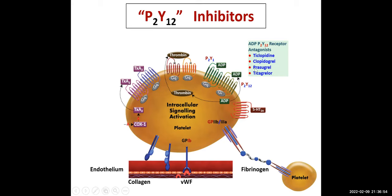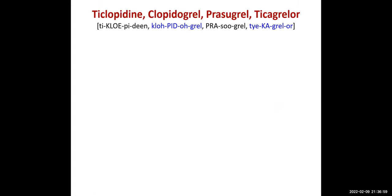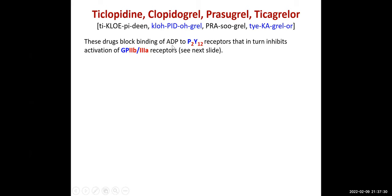Now we go to the P2Y12 receptor antagonists — clopidogrel was one of them. These four drugs block binding of adenosine diphosphate to the P2Y12 receptor. When ADP binds to this receptor, platelets are activated; blocking it inhibits activation of GP2B3A, which is the final step in platelet aggregation. Ticagrelor binds reversibly; the others bind irreversibly, so they are effective for the lifespan of the platelets.